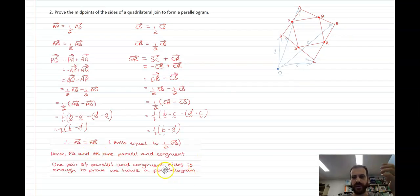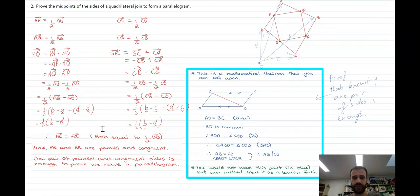Here's what I just said. If you were feeling really wild, you could go through this whole process again to prove that SP and RQ were also parallel, were also the same length. But to prove that something's a parallelogram, you only really need to know that two of the sides or two opposite sides are parallel and have the same magnitude. If it doesn't feel good enough, in this blue square here, I've put a little proof that knowing one pair of sides in a parallelogram is enough to call it a parallelogram. You do not, when doing this proof, need what's in this blue box.